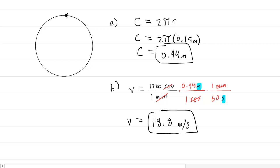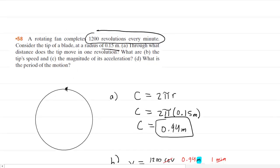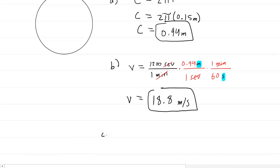In part C, we are asked for the magnitude of the acceleration. Now, this is an example of what's called uniform circular motion, which basically means an object is moving in a circle at a nice steady speed. And the acceleration of an object in such motion is equal to the speed squared divided by the radius.